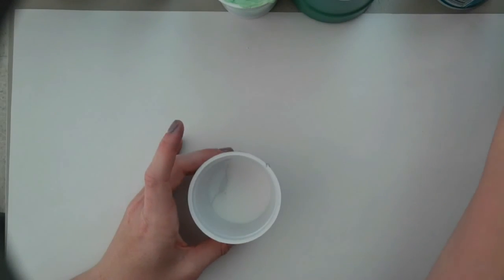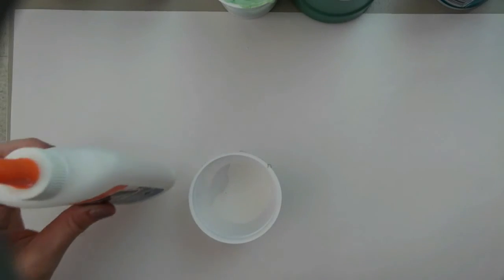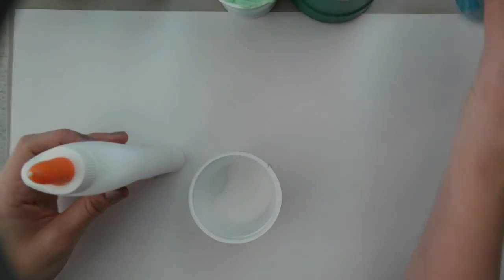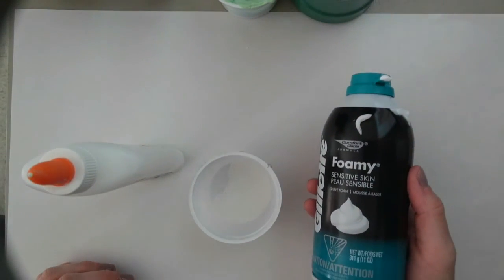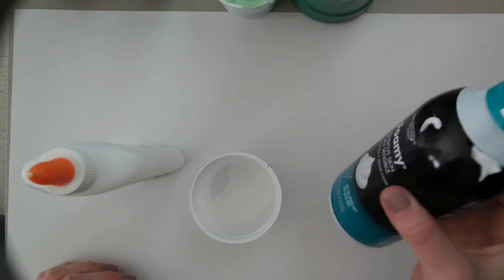Today I'm going to show you how to make puffy paint. What you need is just regular school glue, liquid white glue, and then some regular old shaving cream.